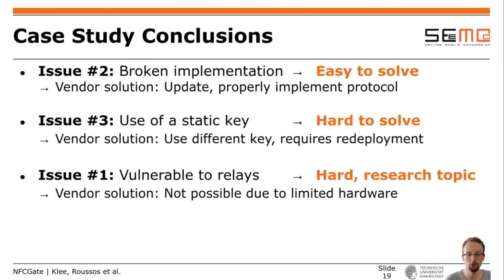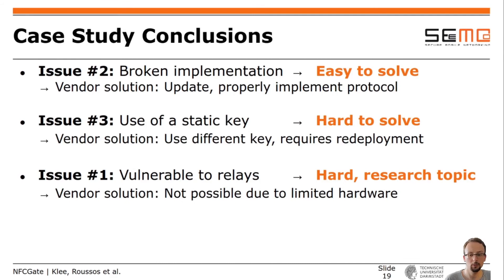After we found these issues, we contacted the vendor with our findings and responsibly disclosed the security issues. Regarding the broken protocol implementation, the vendor plans to properly implement the protocol and roll out an update — this is an easy fix. Fixing the use of a static key requires more effort, since the vendor plans to change the key, which would require users to redeploy every lock and transponder in their installations. The vendor says they cannot fix the vulnerability against relay attacks due to hardware limitations.